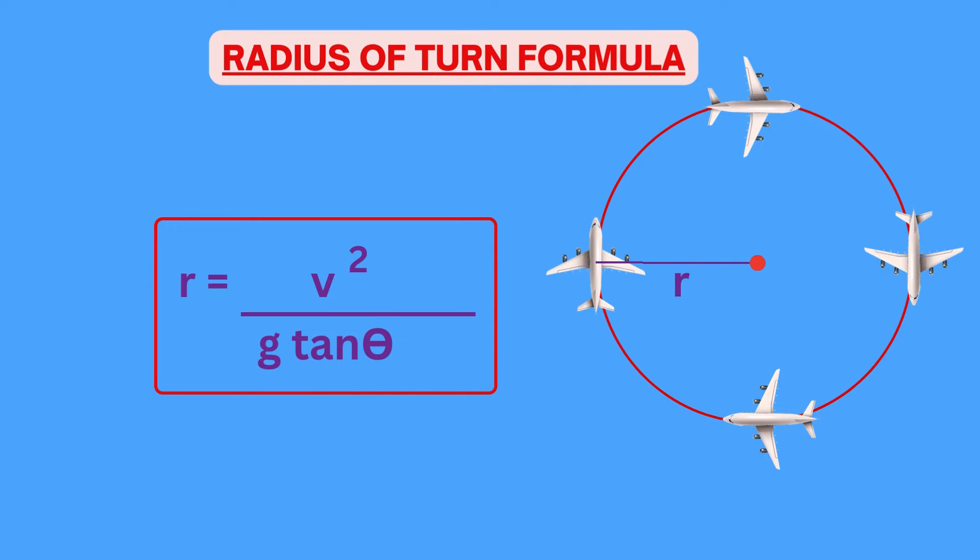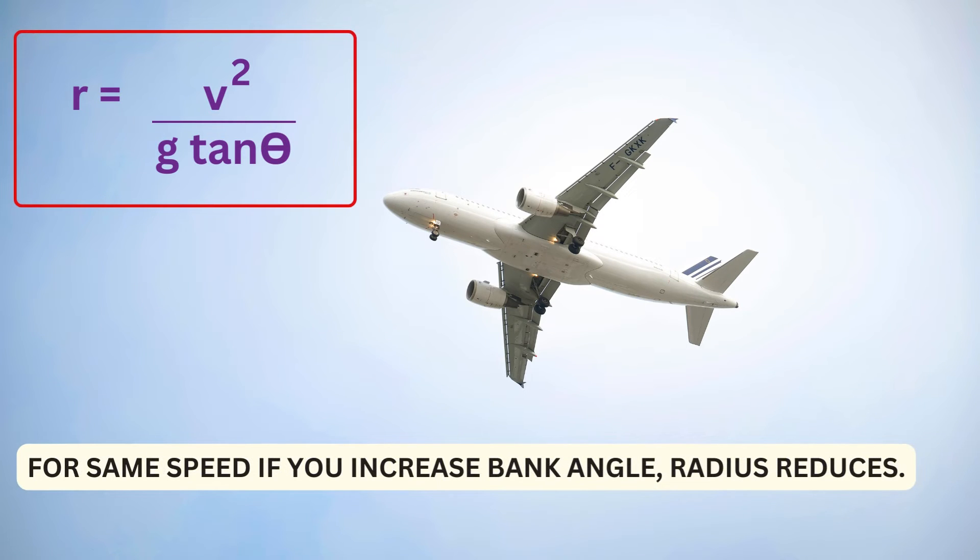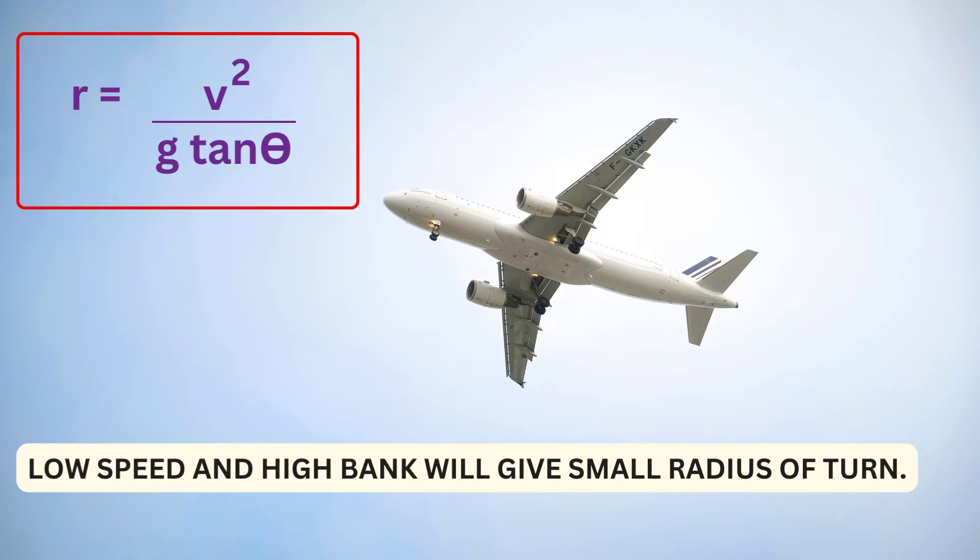If you apply this formula for different scenarios, we get to know that if you double the speed for the same bank, radius becomes 4 times and if you reduce the speed to half, the radius is 4 times lesser. For the same speed, if you increase the bank angle, the radius reduces. So low speed and high bank will give small radius of turn.